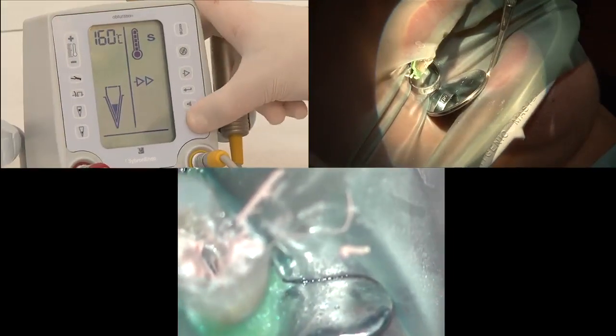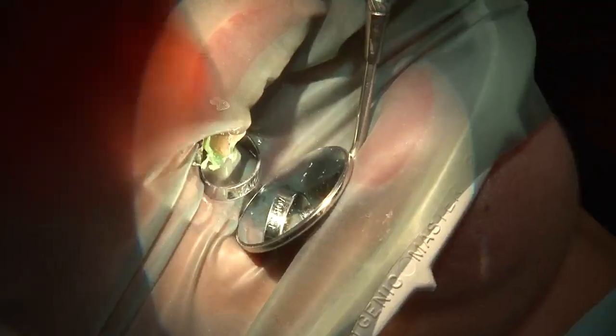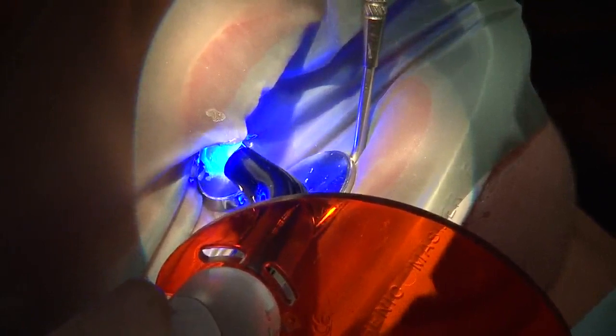The cure light is used for 40 seconds to achieve immediate coronal seal of my obturation material. A bit of composite is being used as temporary material before the final restoration is made.